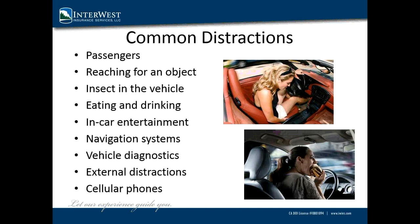Diagnostic warnings are oftentimes communicated with a symbol, like a swerving car or an oil can, that are not familiar to all drivers. External distractions are typically visual and include common sites like construction or road work, advertising signs, pedestrians, or even other vehicles. Lastly, cell phones present a combination of all three categories — with calls, texting, social media, and other apps that we as a society can't seem to keep our attention away from.